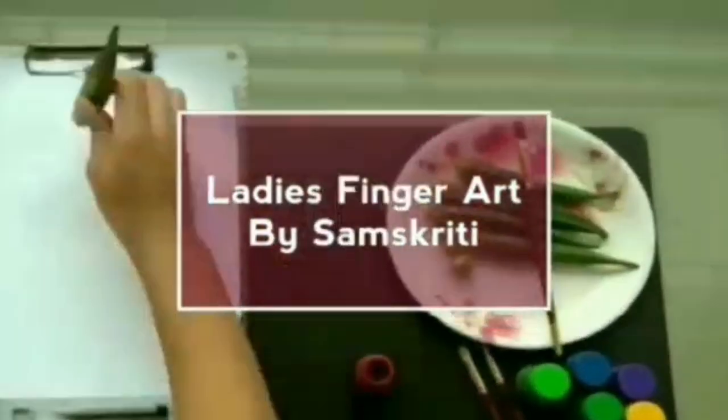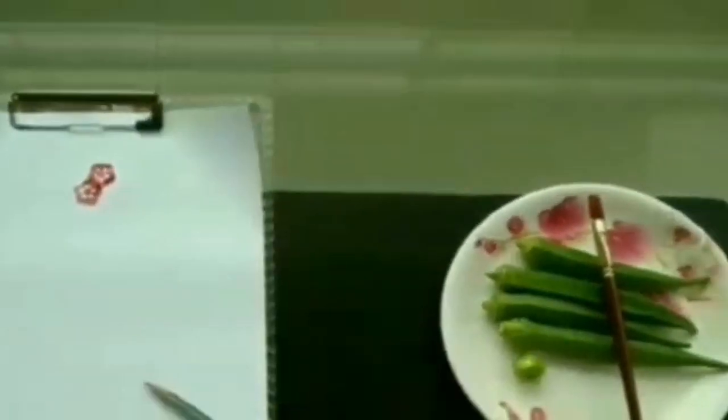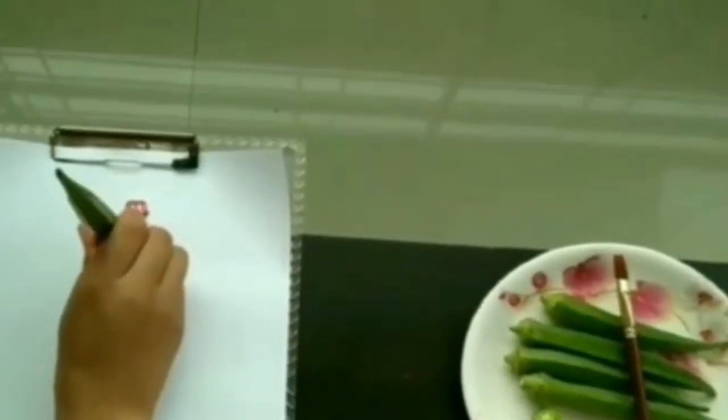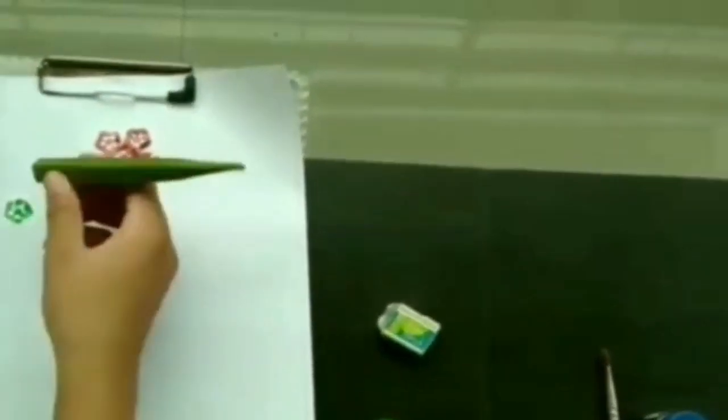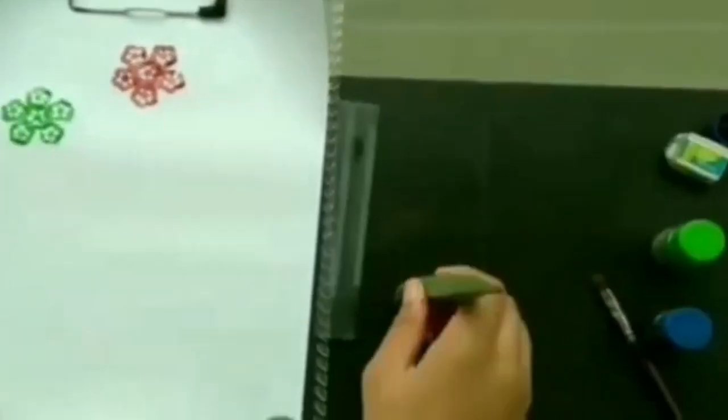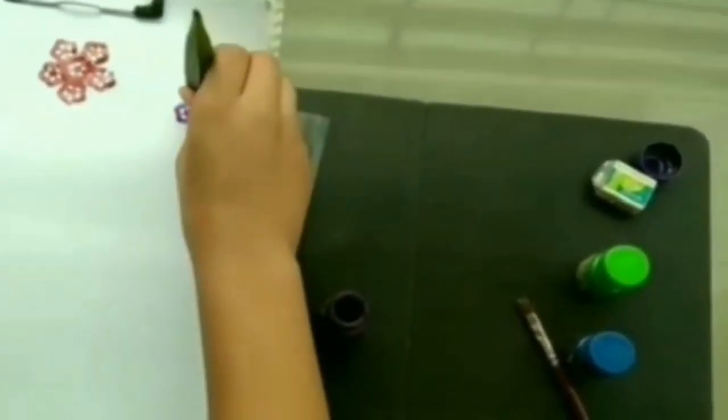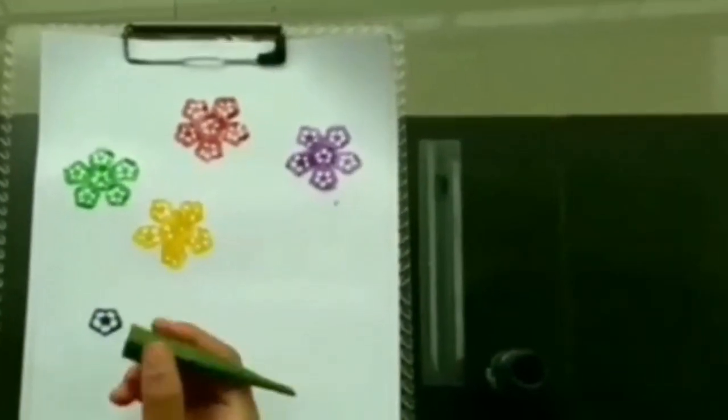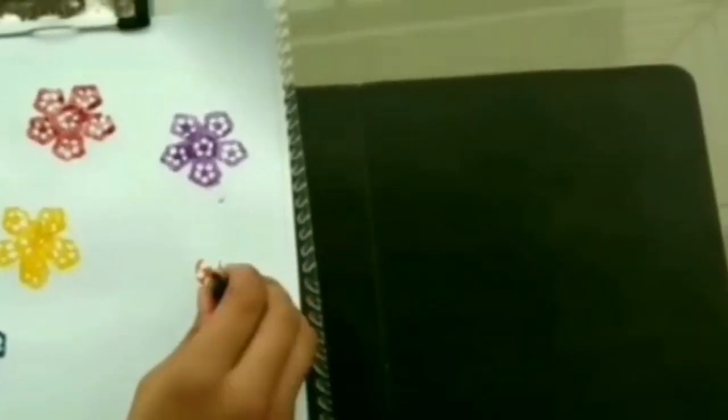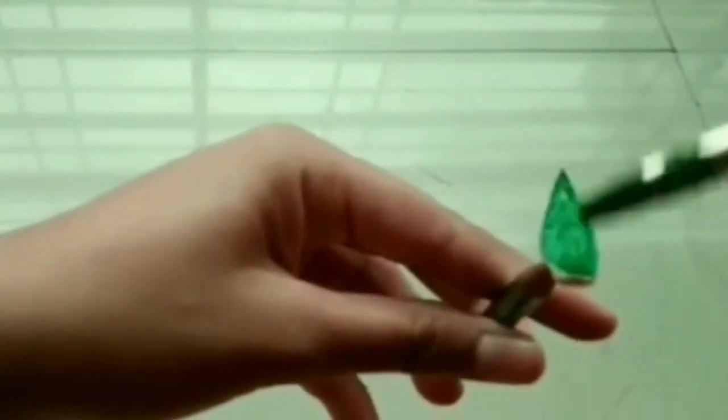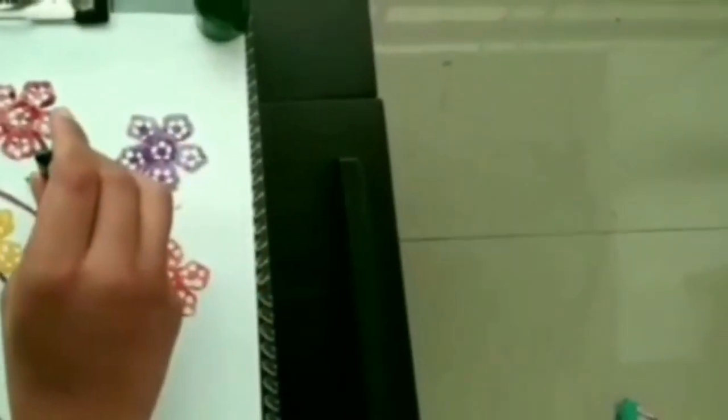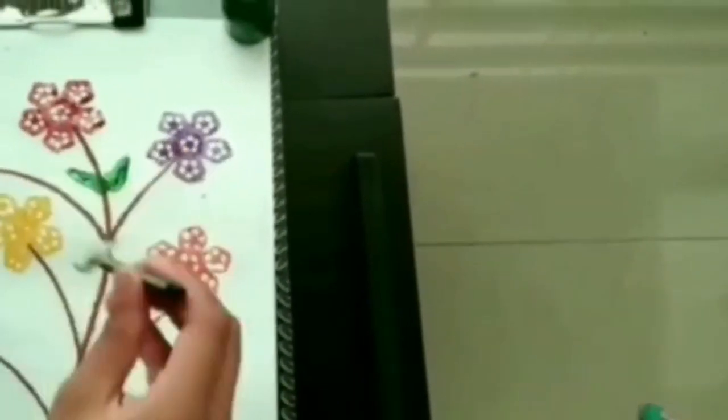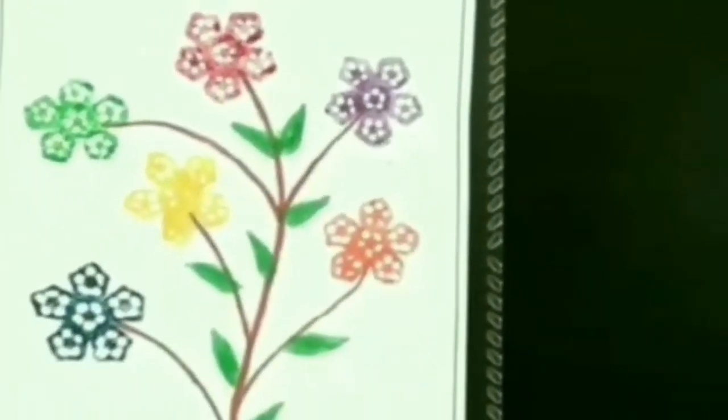Lady's finger art by Samskruti. Cut a lady finger, dip it in the color of your choice. Print it on the paper. Do the same with other colors. Take the inner part of the onion and paint it with green. Print it on both sides of the stem. Our lady's finger art is ready.